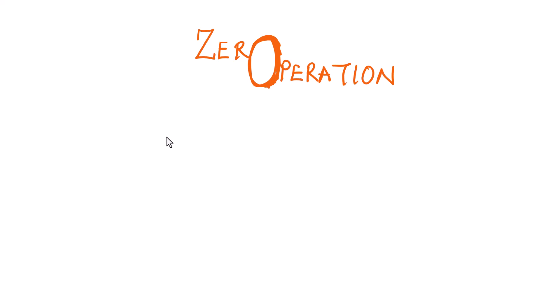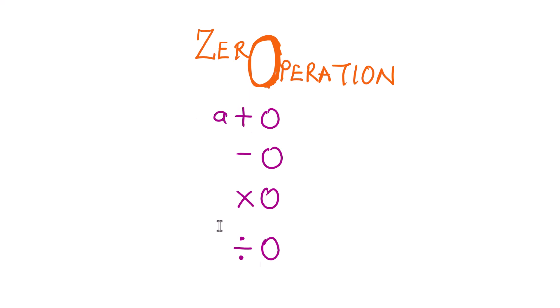We are looking at zero operations — specifically applying negative, positive, multiplication, and division to two numbers where one of the numbers is zero. We will see how this impacts the results we get when we apply these rules, where 'a' represents any number.